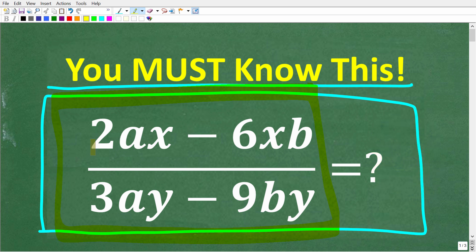Let's take a look at the problem. We have 2ax minus 6xb over 3ay minus 9by. Now, if you think you know the answer, put that into the comment section. I'm going to show you the correct solution in just one second. Then I'm going to tell you what this critical skill is and how we need to use it to simplify this expression.